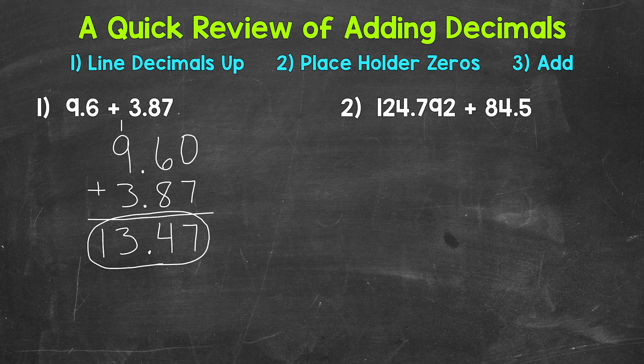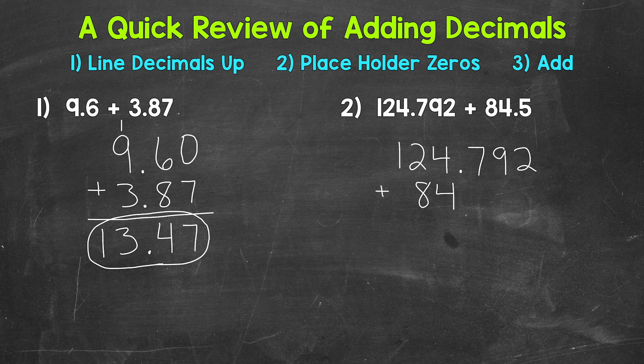So let's line our decimals up here: 124 and 792 thousandths plus 84 and 5 tenths. So let's use placeholder zeros to line this up a little better here—a zero in the hundredths, and then a zero in the thousandths. Again, zeros to the right of a decimal do not change the value of that decimal. It's an equivalent decimal, so we're able to use those placeholder zeros. Now we can add.